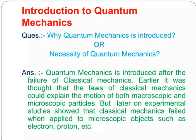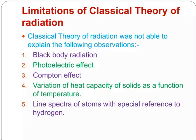Why is quantum mechanics introduced and necessary? Quantum mechanics is introduced after the failure of classical mechanics. Earlier, it was thought that the laws of classical mechanics could explain the motion of both macroscopic and microscopic particles. But later on, experimental studies showed that classical mechanics failed when applied to microscopic objects such as electrons and protons.